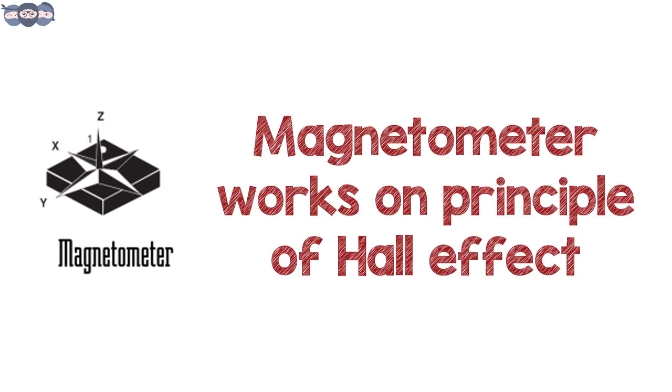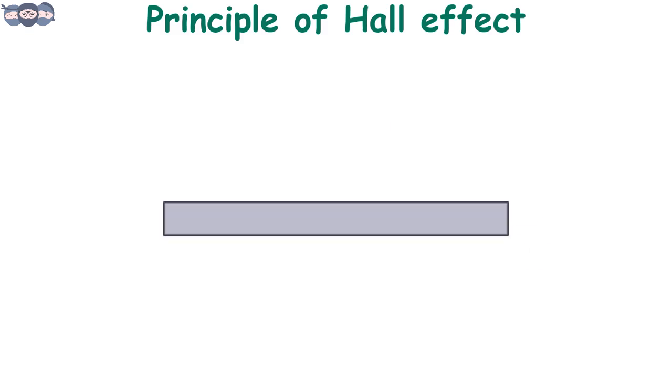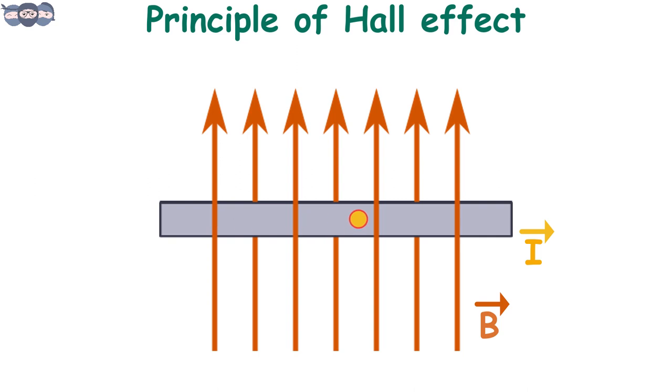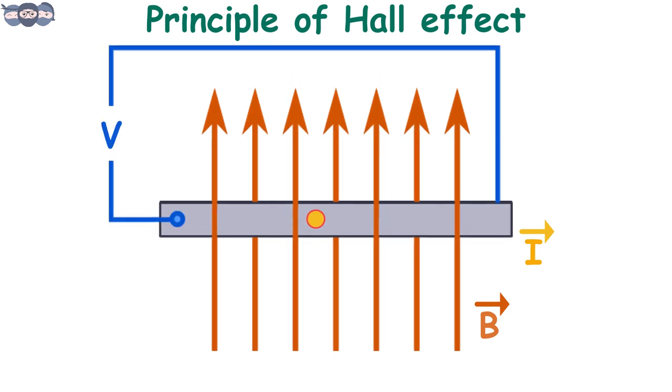This can be achieved using the principle of Hall effect. According to Hall effect, if a current carrying conductor is placed in the magnetic field, a voltage is generated across the conductor which is perpendicular to both the current and magnetic field.